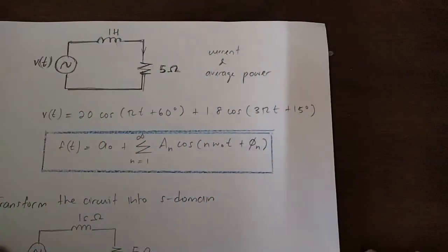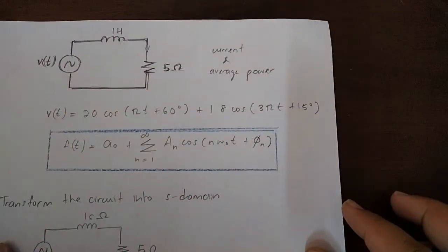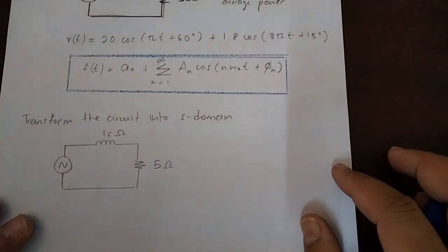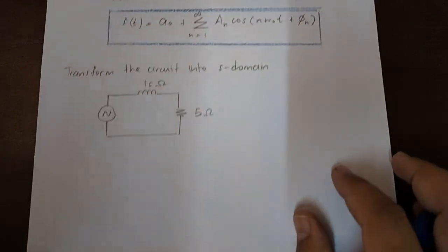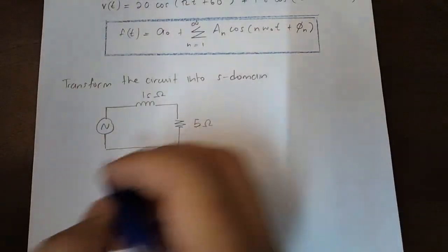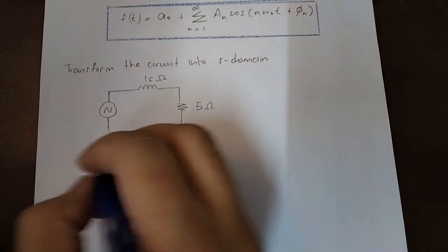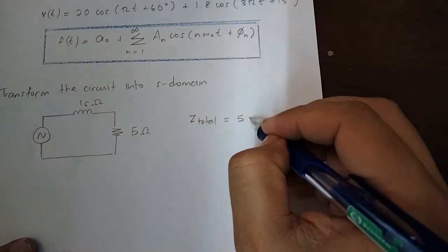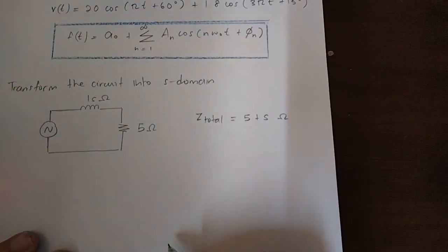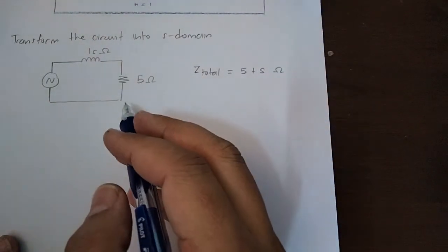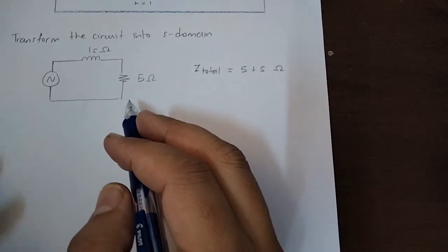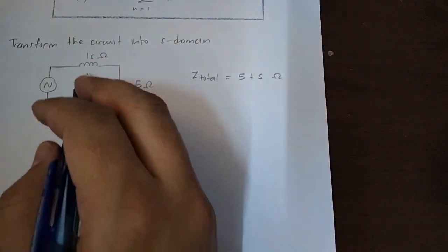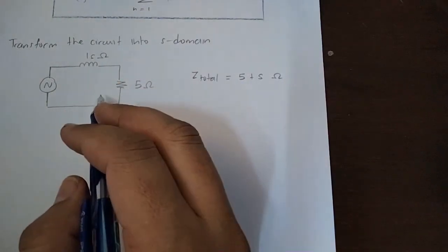Let's calculate the total current for the circuit and also the average power. First, let's calculate Z_total. Z_total is simply 5 plus S. Of course, if the circuit has parallel and series combinations, you have to work those out first to determine Z_total, because we want to calculate the total current and total power.